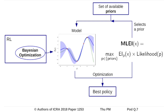To exploit these priors, we introduce a novel acquisition function for Bayesian optimization that balances between how likely the prior is given the data, and how helpful this prior can be for the optimization. We call this acquisition function Most Likely Expected Improvement, or MLEI.